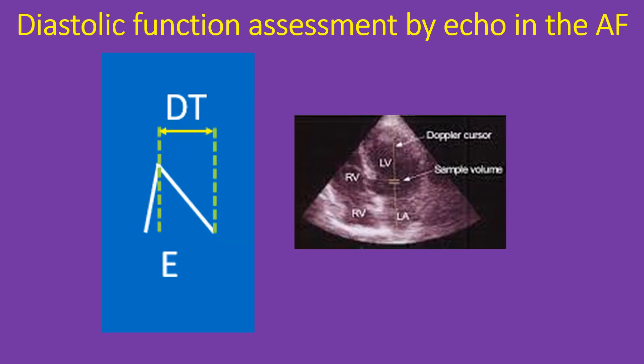Mitral E wave DT less than 100 ms correlates with a pulmonary wedge pressure of more than 18 mmHg. Deceleration time is the duration between the peak of the E wave and the upper deceleration slope extrapolated to the baseline, usually measured from the apical 4-chamber view. Pulmonary vein diastolic wave DT is also measured in a similar way from the right upper pulmonary vein in the apical 4-chamber view.